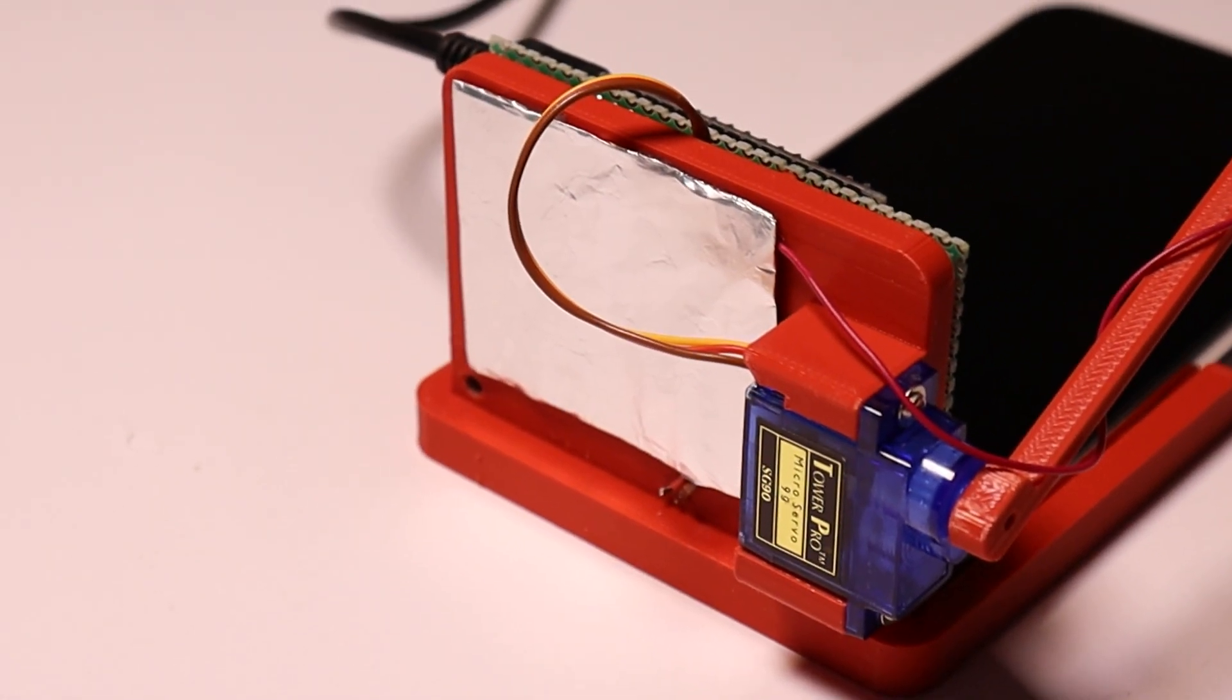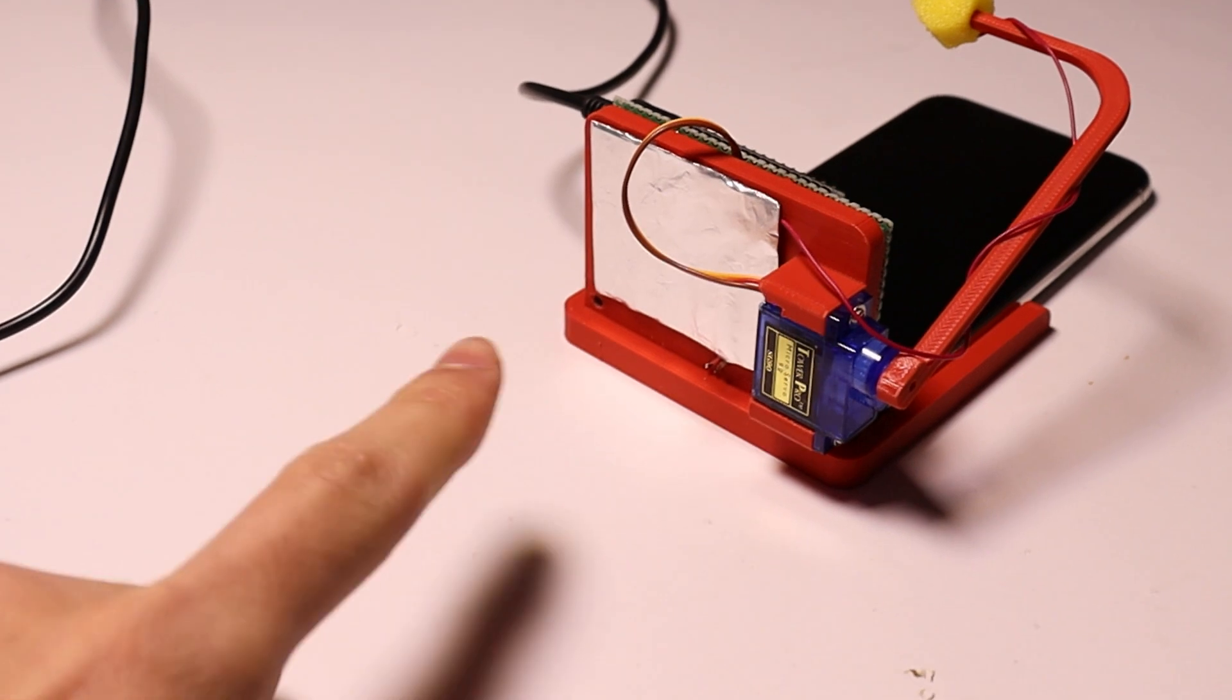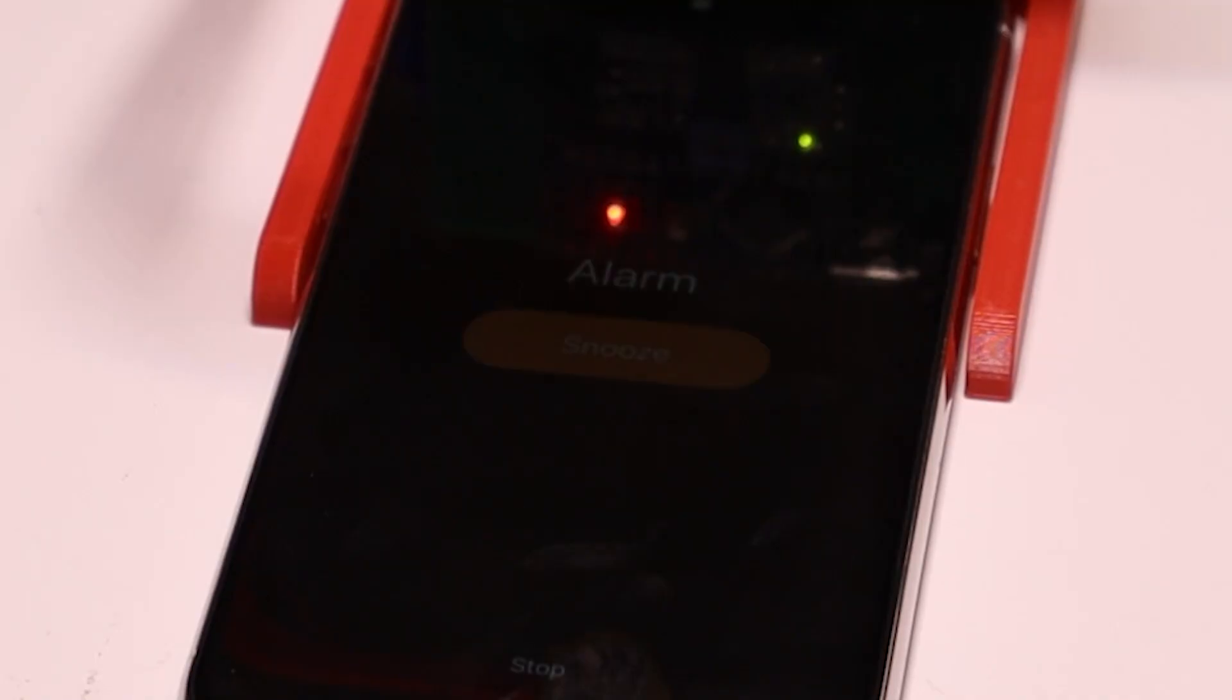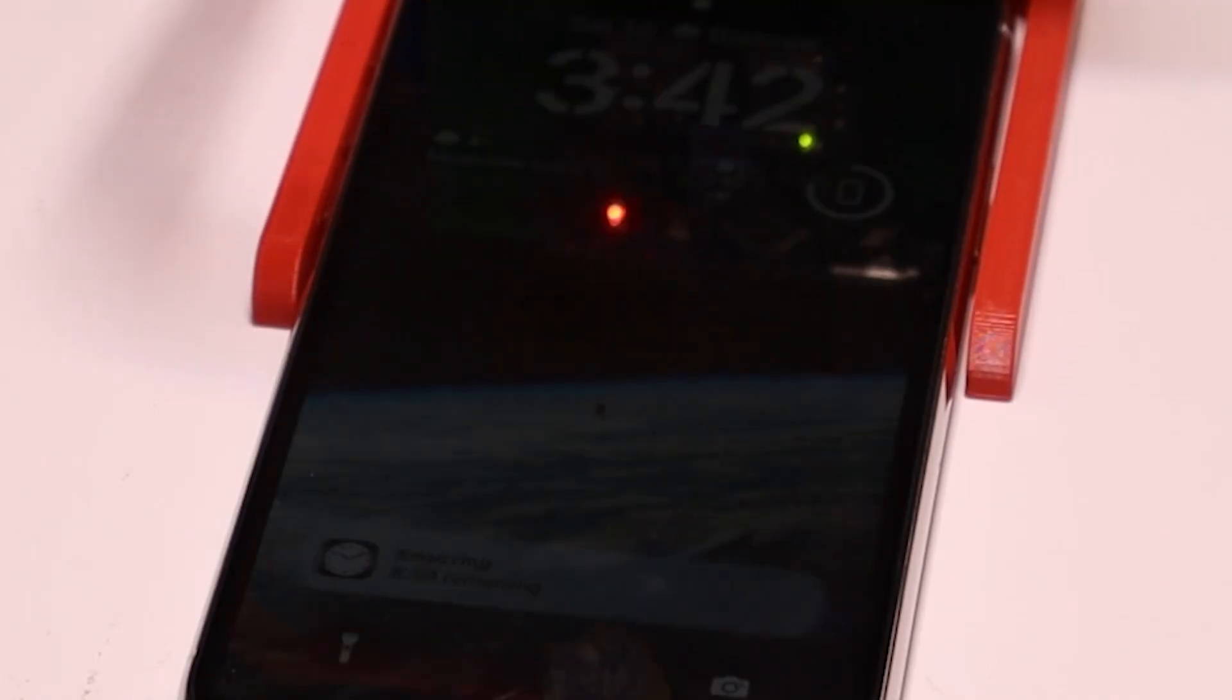And if you were asking yourself what the hell is this, let me just say that this part represents the capacitance of human body and this way the capacitive touch screen can recognize the touch. Yes, I didn't think I would need to do this, but without this, it wouldn't work.